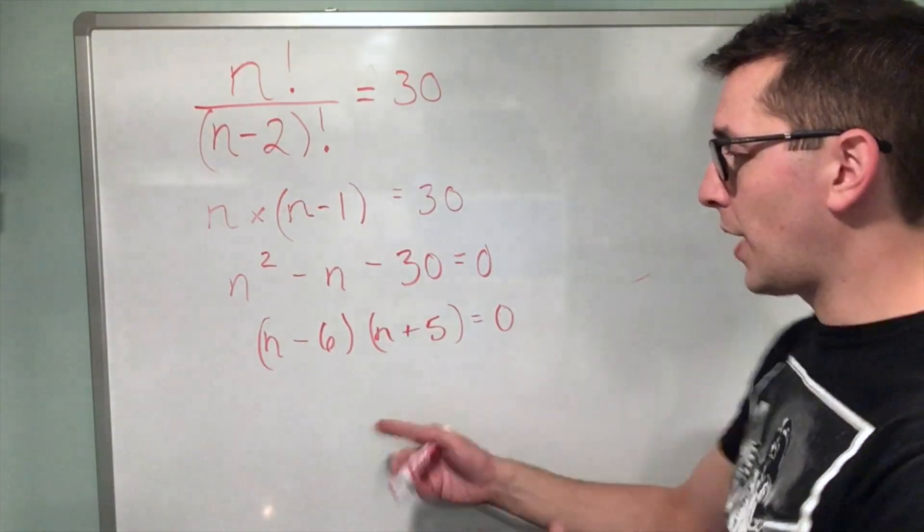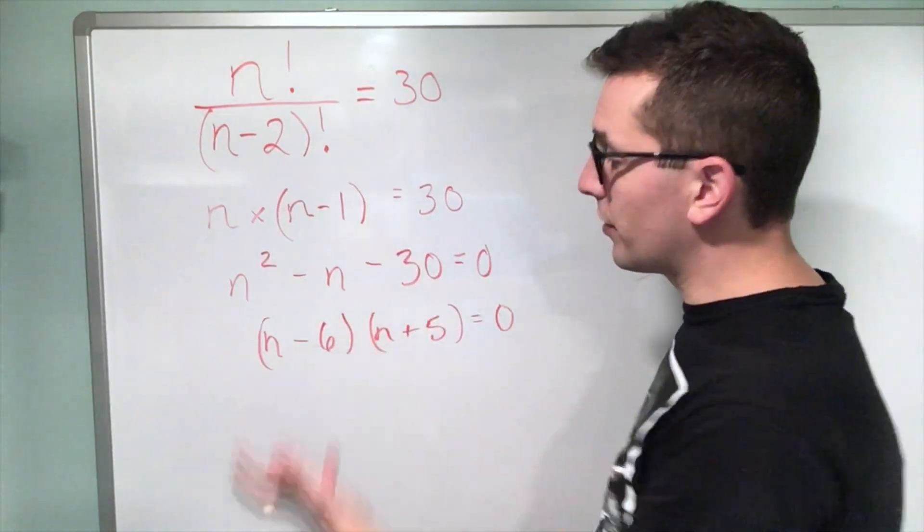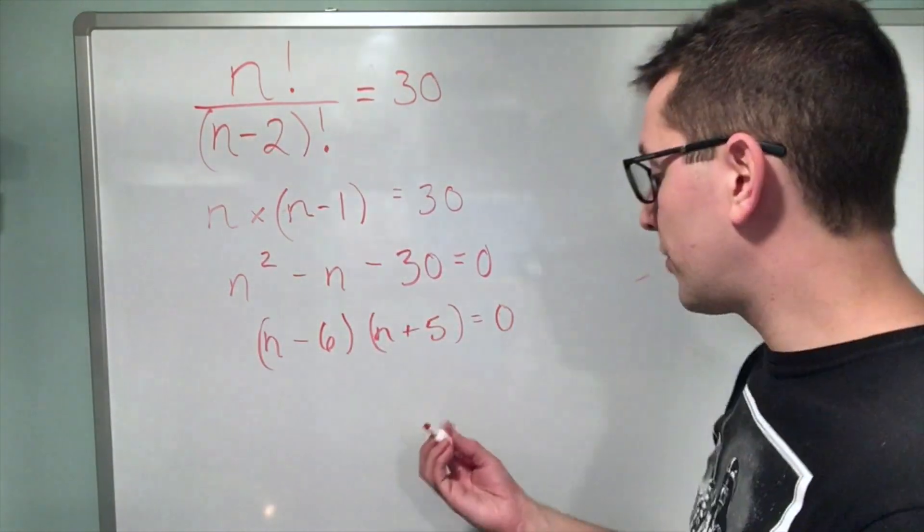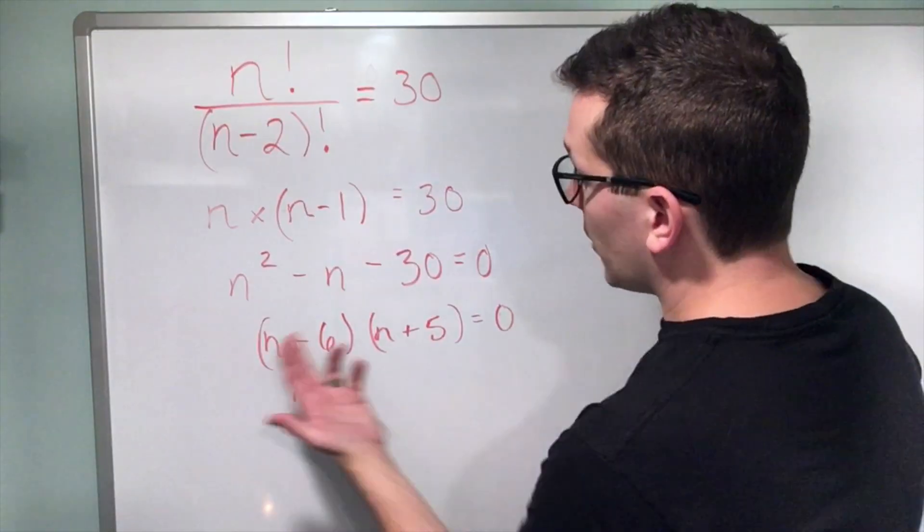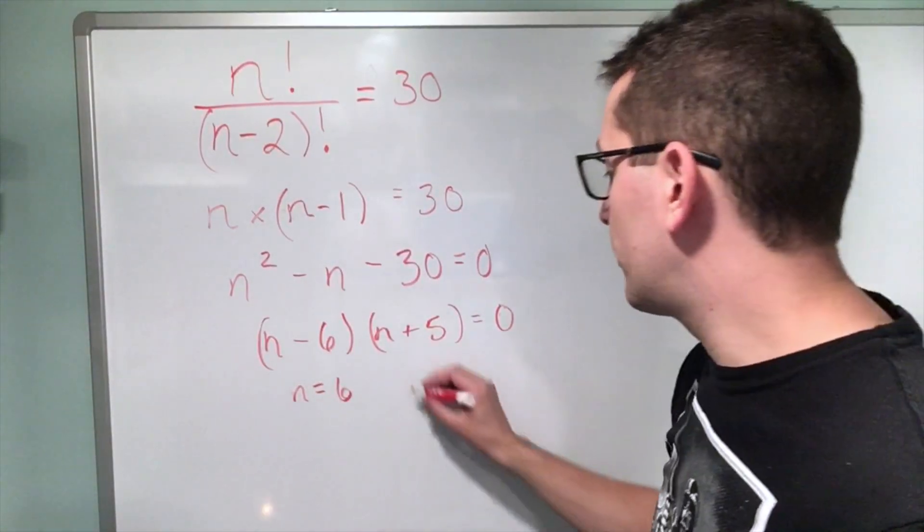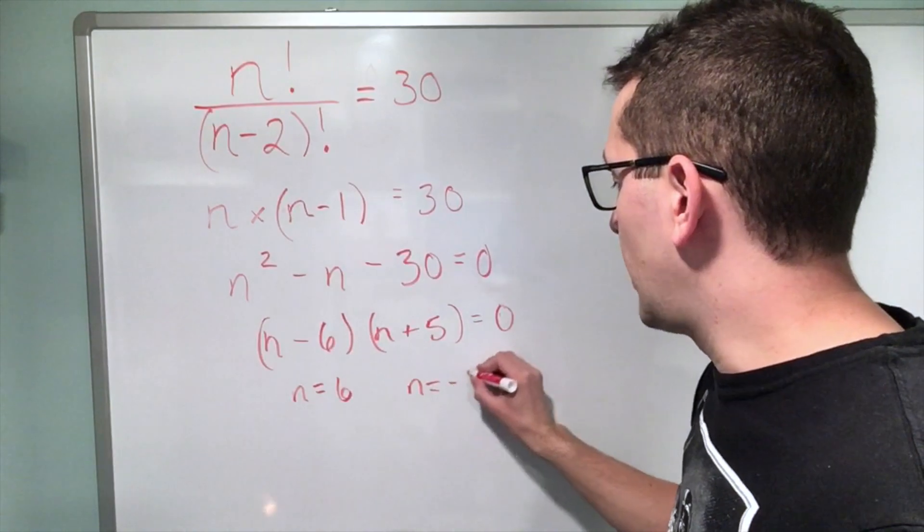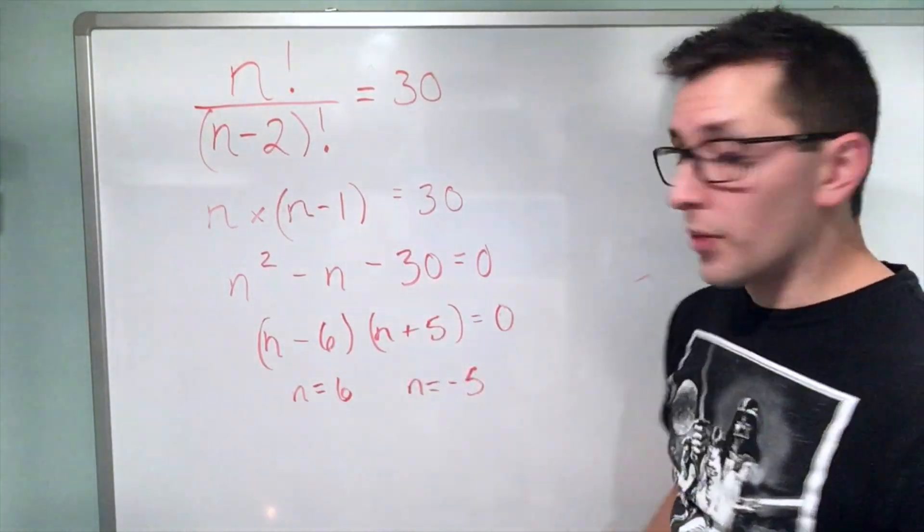Now, at this point, it's really just a matter of finding the n values which make each set of parentheses equal to zero. That should be pretty simple. Looking at this one, I can see that n equals six should be the value that makes this zero. Looking at this set of parentheses, I should see that n equals negative five will make this set of parentheses zero.